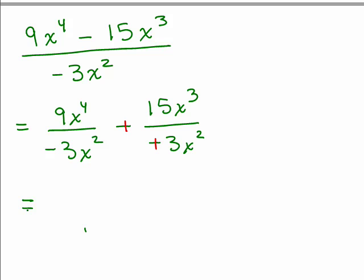Put it on pause and try it. We're back — so 9 divided by negative 3 is negative 3. X to the fourth divided by x squared, subtracting exponents, gives you x squared. And 15 divided by 3 is 5, and x cubed divided by x squared, subtracting exponents, is x to the first, which is just x. So this is your answer.